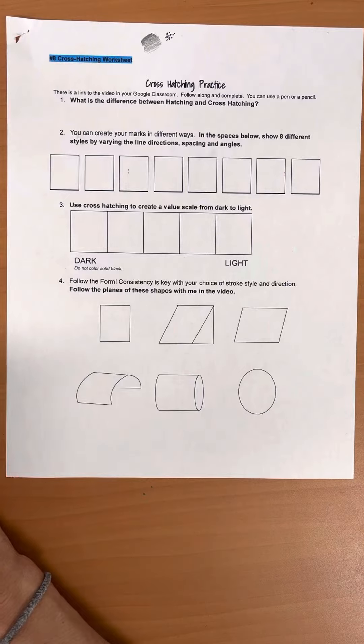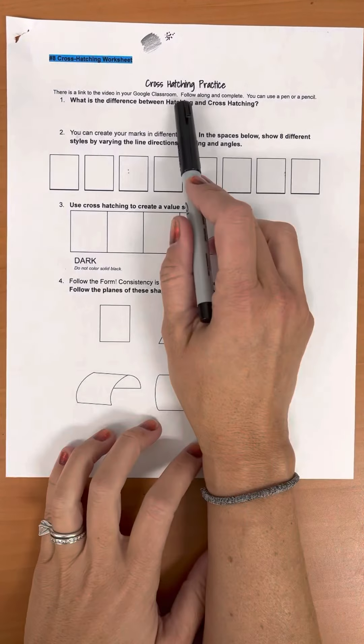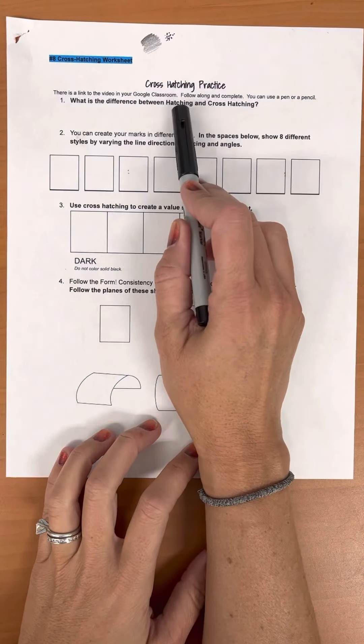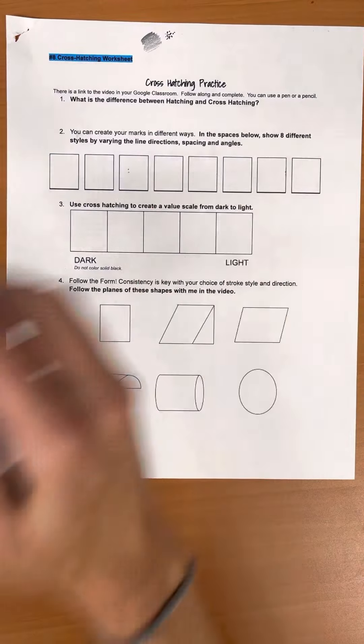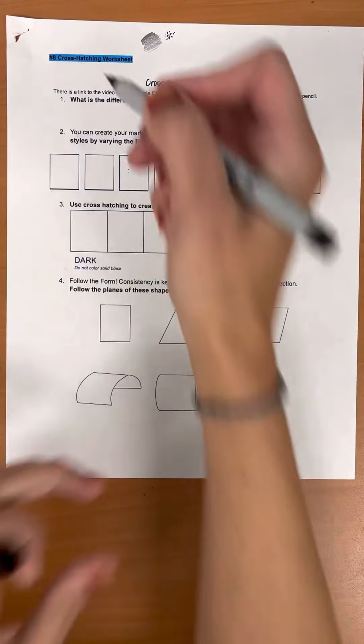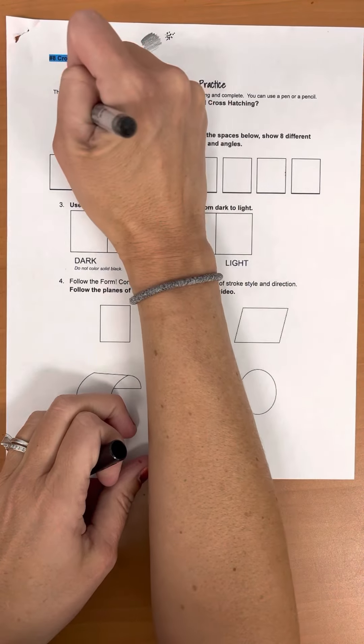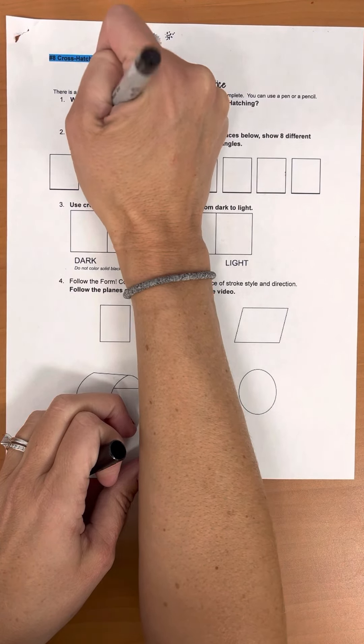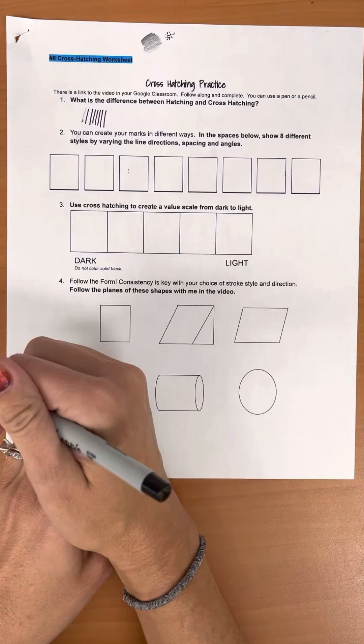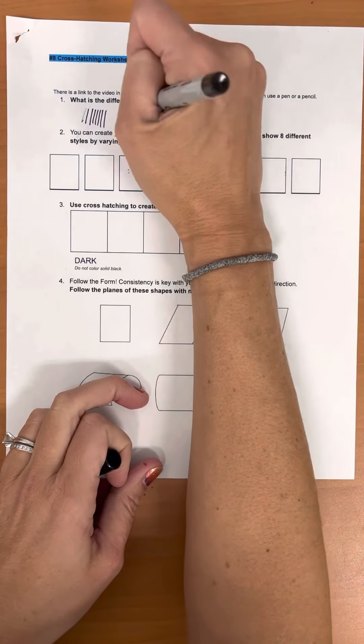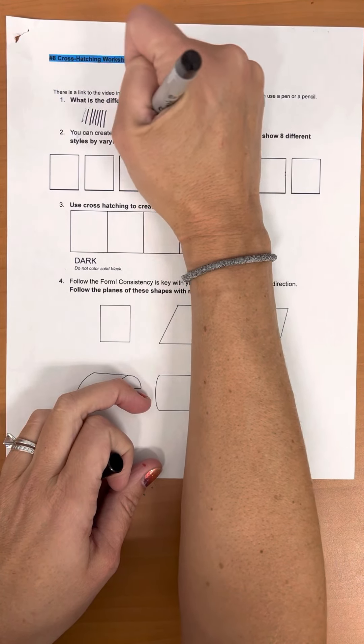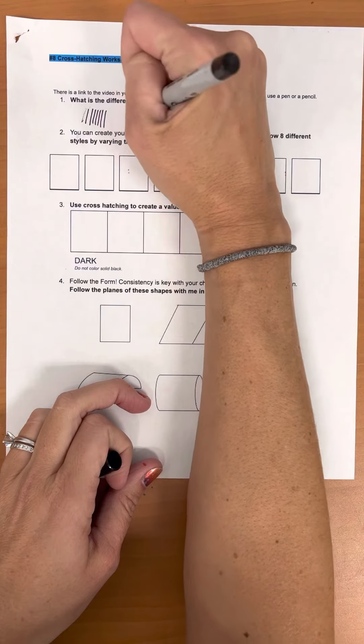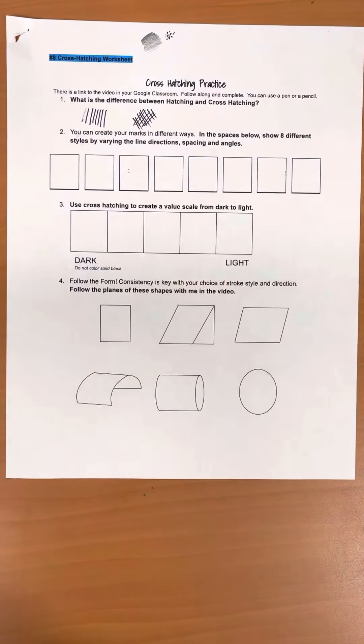You'll hear two different terms: hatching and cross hatching. Hatching is when you create parallel lines in one direction. So hatching looks similar to this, where all of your lines go parallel. Cross hatching is when you make parallel lines and then cross them in different directions. So that would be cross hatching.